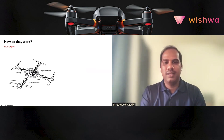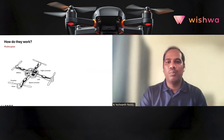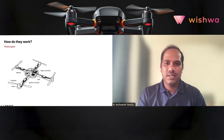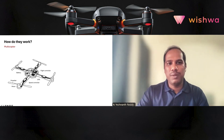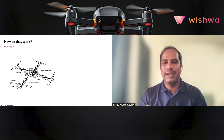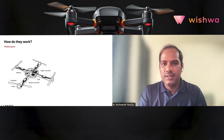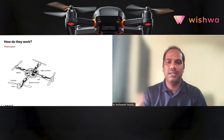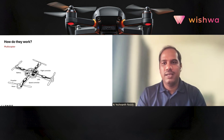Take a quadcopter for example — all it has is four simple motors, each connected to one propeller or rotor. When the motors spin, the propellers spin, and in turn generate lift. That's essentially it. These motors are connected to Electronic Speed Controllers, which regulate the amount of current flowing to the motors — more current means higher speed, higher speed means more lift.